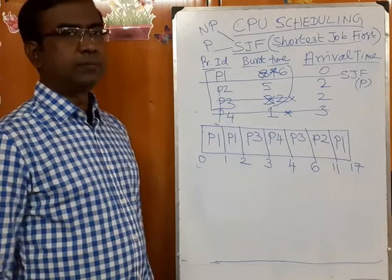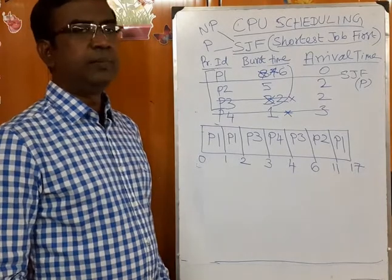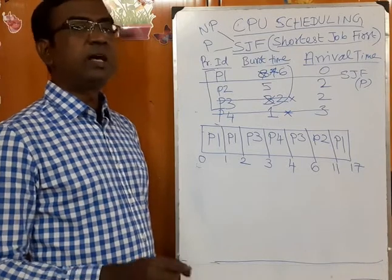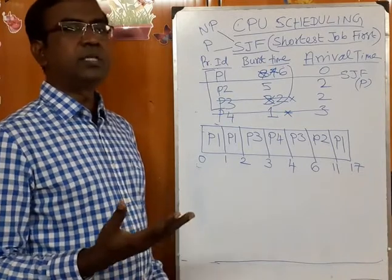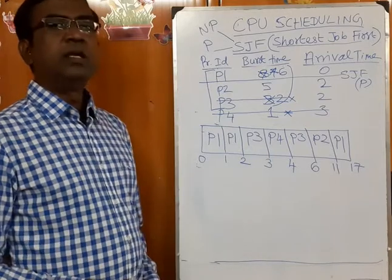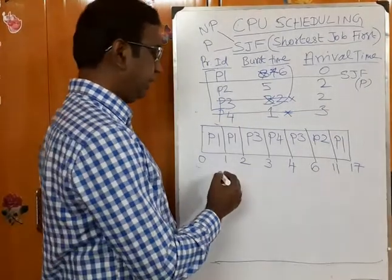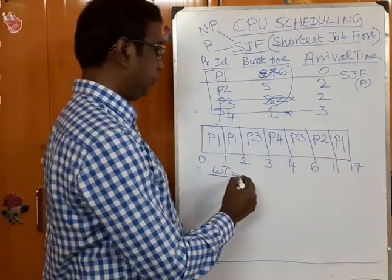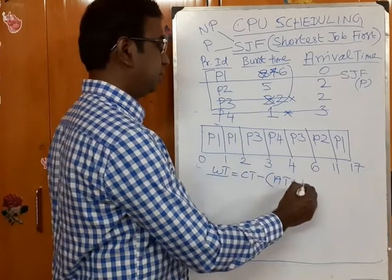The concept of preemption: the current process will get suspended if any new process with a lower CPU burst time arrives at the ready queue. At any given time, the CPU ensures the smallest job is executing first. The formula for waiting time is: waiting time = completion time minus arrival time minus CPU burst time.